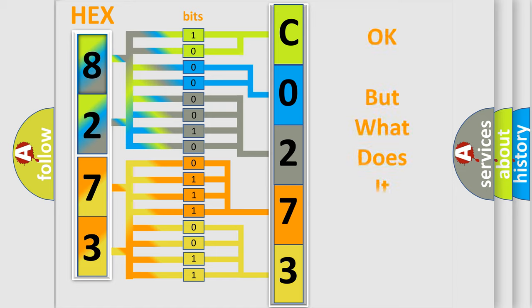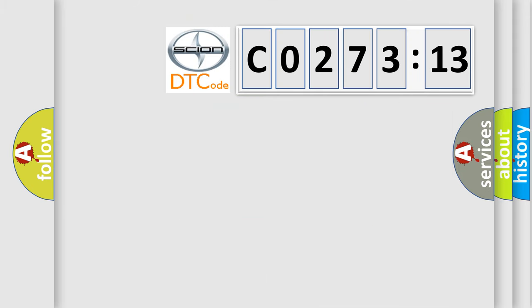The number itself does not make sense to us if we cannot assign information about what it actually expresses. So, what does the Diagnostic Trouble Code CO27313 interpret specifically for Scion car manufacturers?